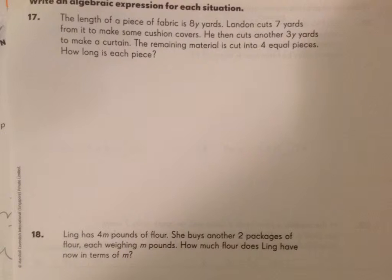Number 17: The length of a piece of fabric is 8Y yards. London cuts 7 yards from it. So I'm starting with 8Y and I'm going to cut 7 yards. He makes some cushions. He then cuts another 3Y more. He's starting with this 8Y, cutting 7, and then cutting 3Y yards from that to make some curtains.